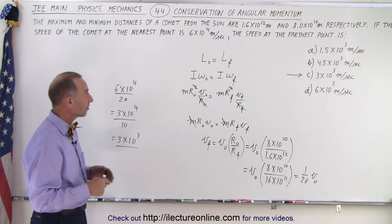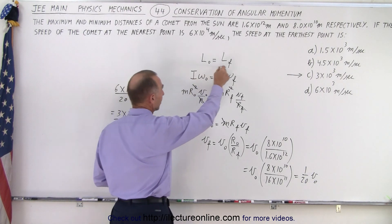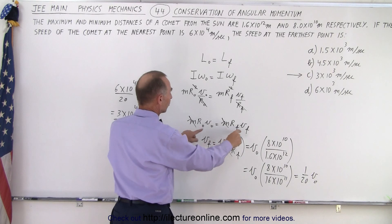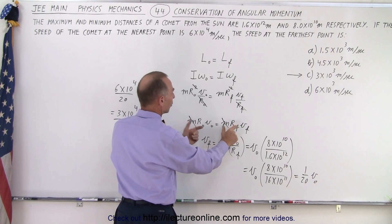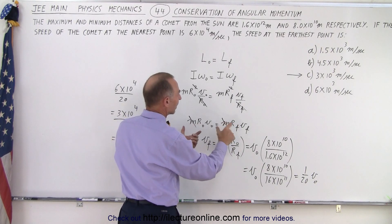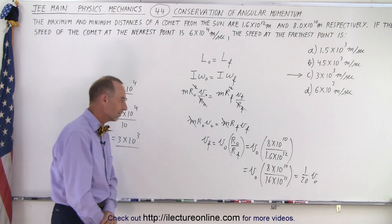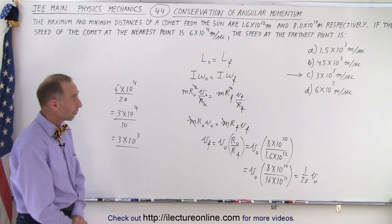What's nice here is that by using the conservation of angular momentum and simplifying the equation, we simply see that it's a ratio of the radii and the velocities. And that's how we solve this problem.